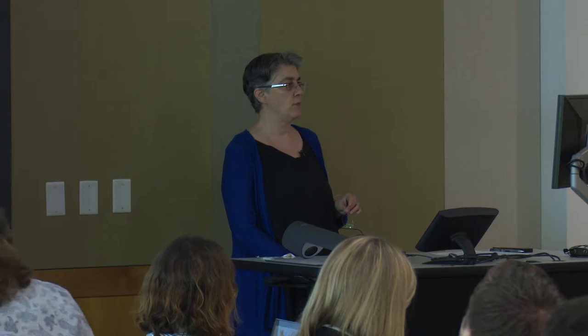This is going to summarize what we've been looking at up until now, and it responds to a number of different questions that have come up in our discussions with you. So the first goal is reinforcing. What is the Flight approach? What are we trying to do? The first goal is reinforcing norms and conventions. Now you might say, well, that sounds counterintuitive — you keep talking about the literary, how come you're now talking about reinforcing norms and conventions?